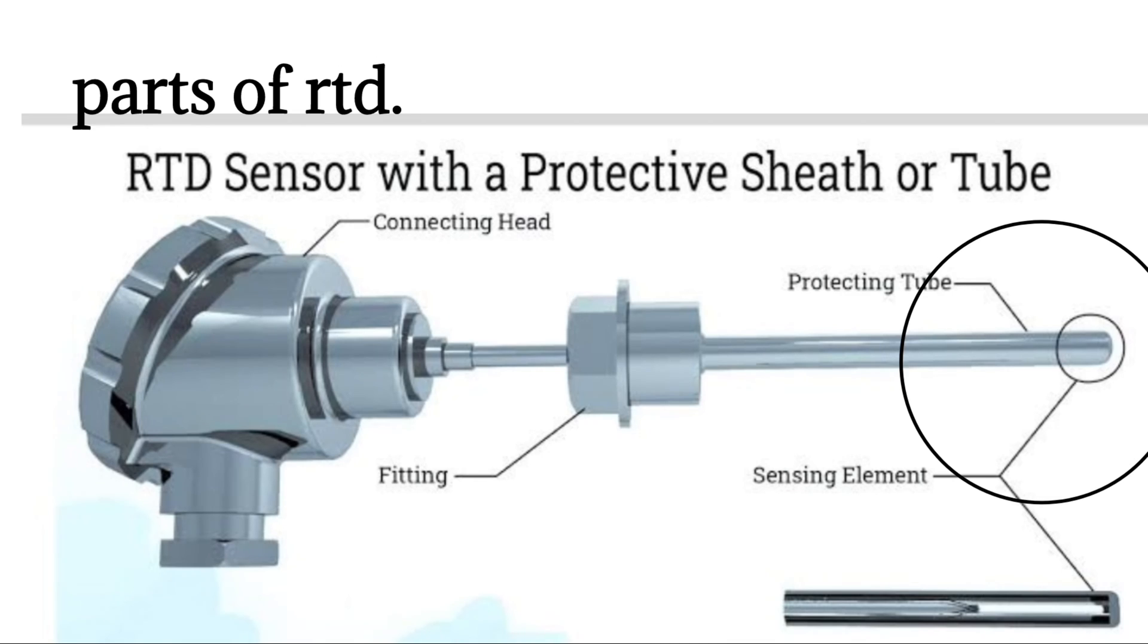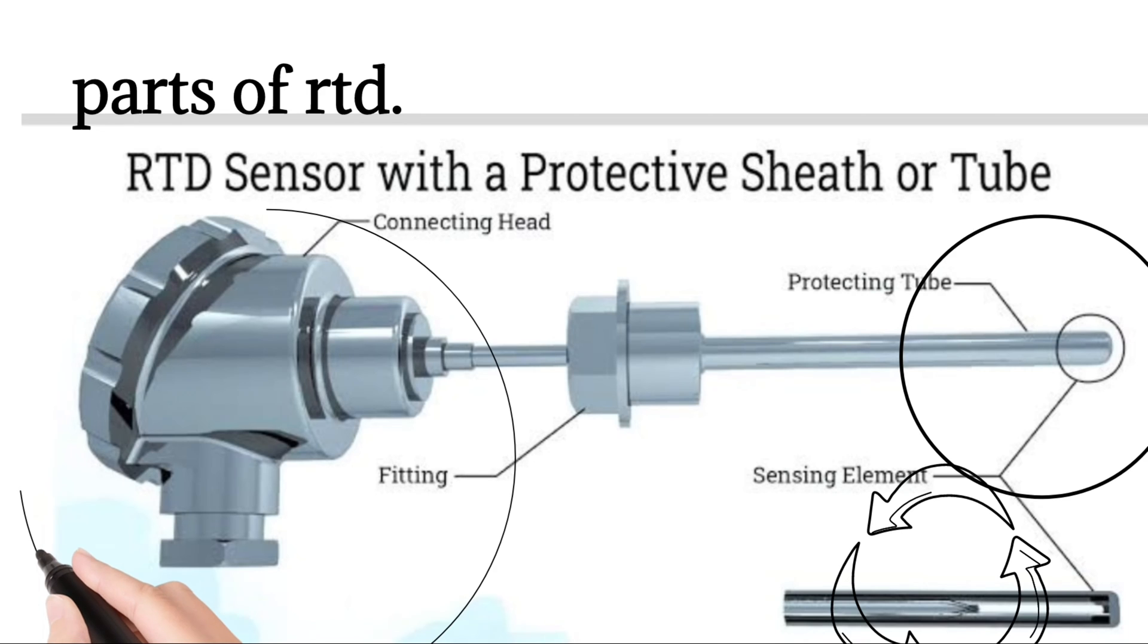Threaded adapter. The threaded adapter is welded over the rear housing of the sensor sheath. One end of the threaded adapter threads into a thermowell or directly into the process piping, the other end is typically threaded into a temperature transmitter.